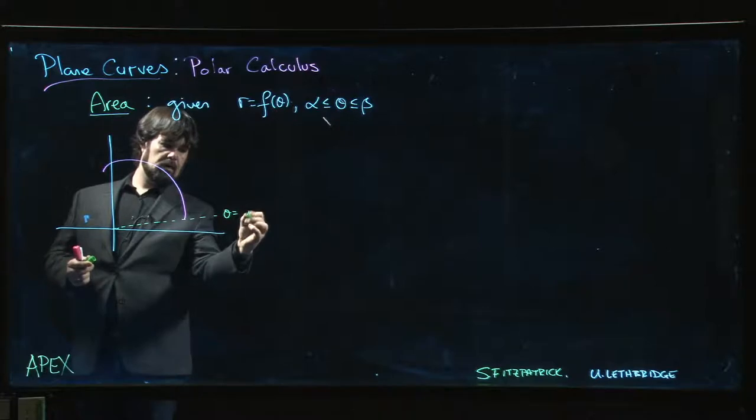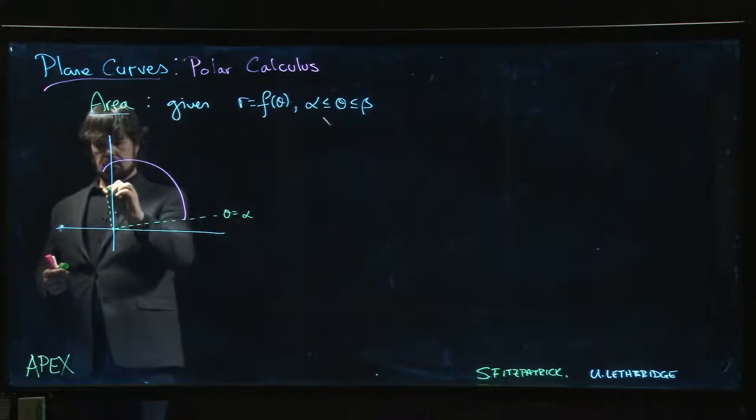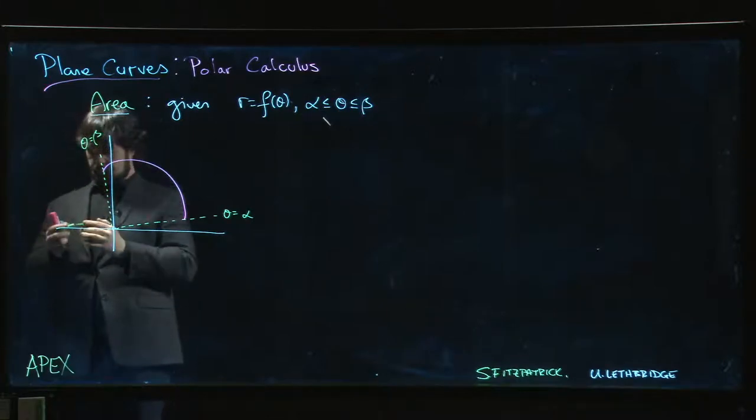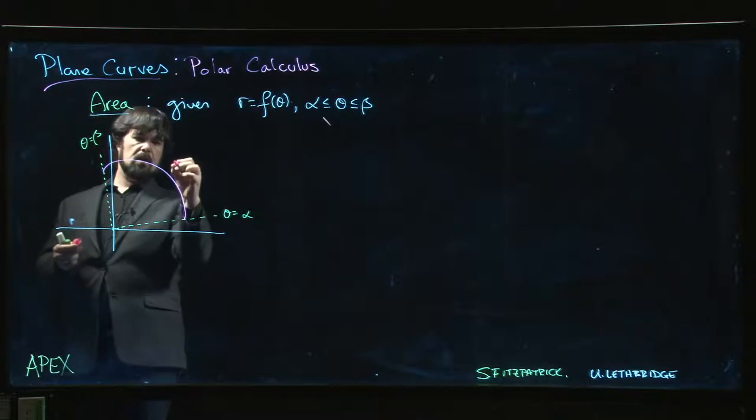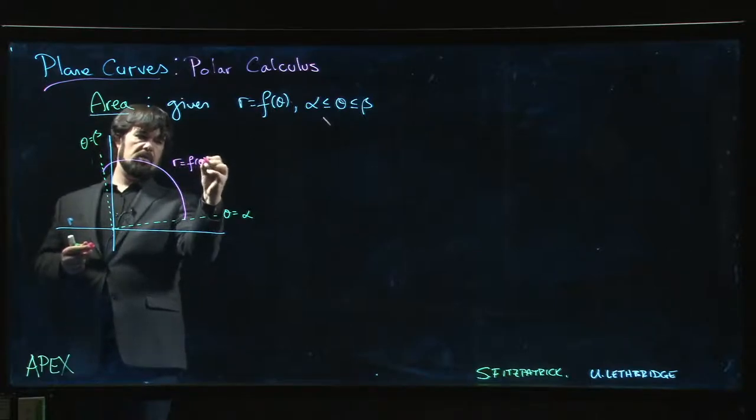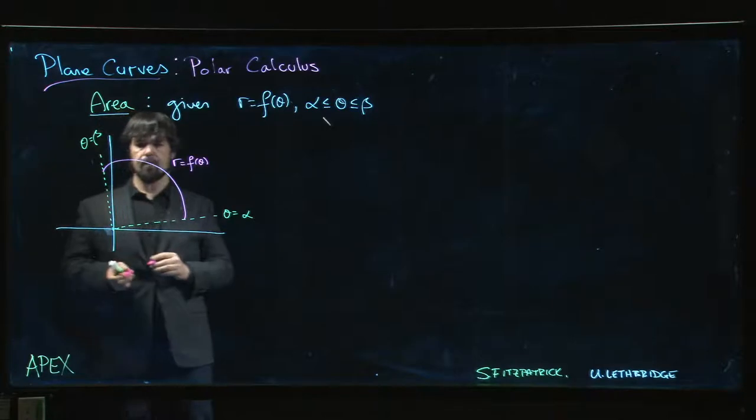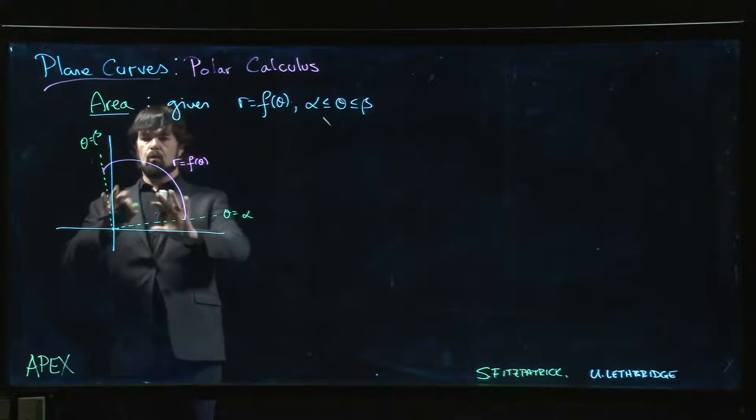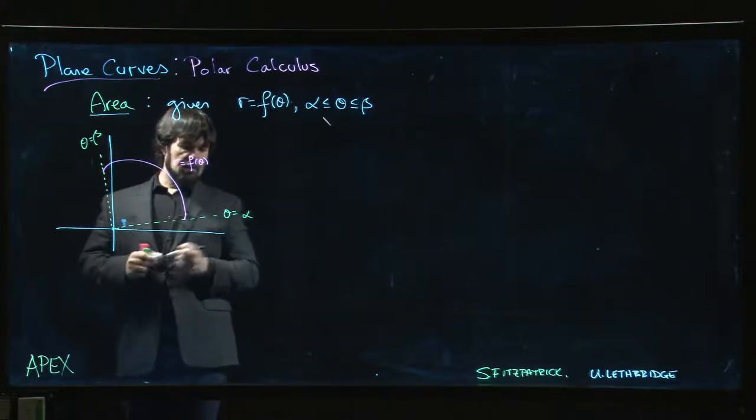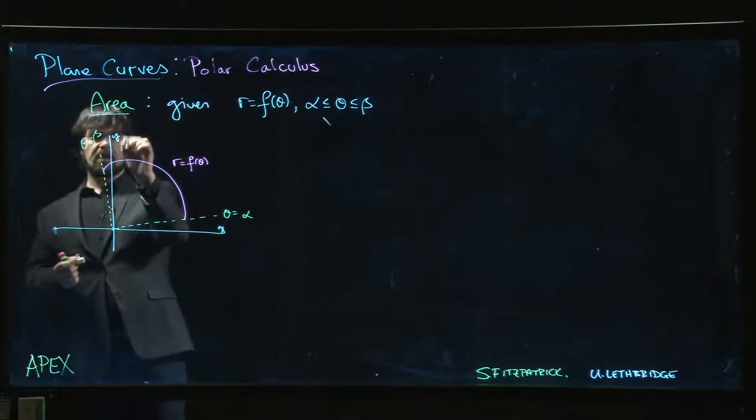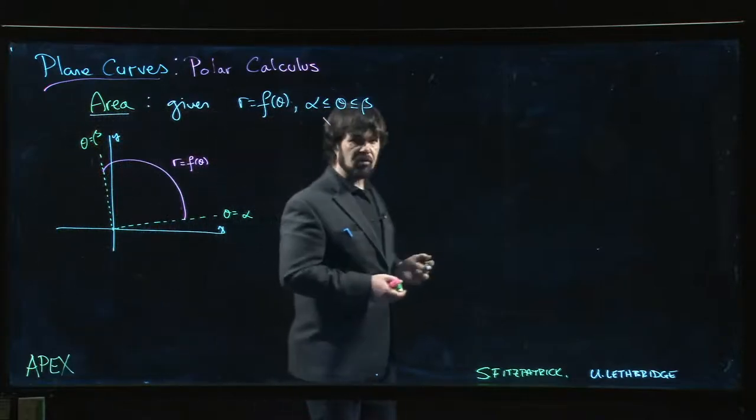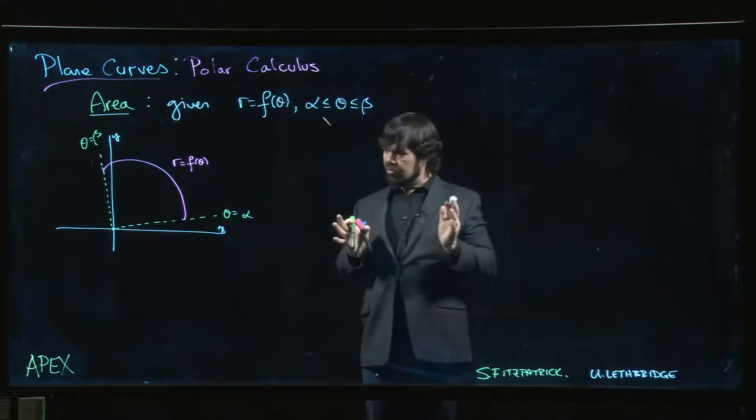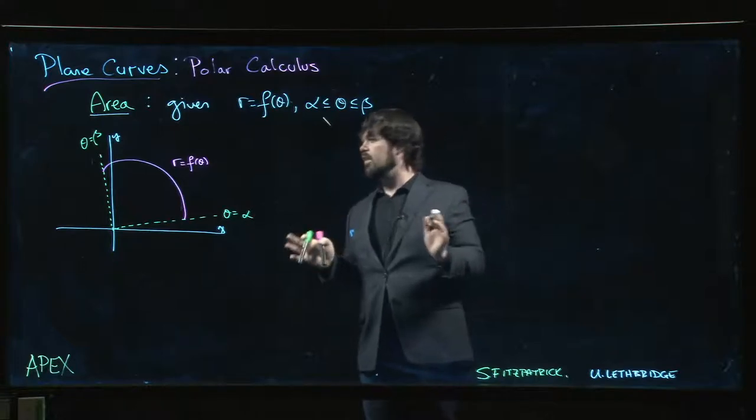Here's theta equals alpha, up here theta equals beta, and here is your r equals f of theta. It's a curious thing because we're describing the curve in terms of polar coordinates, but we're plotting it in terms of rectangular coordinates. We're still in the usual XY Cartesian plane.